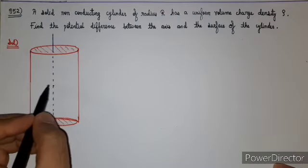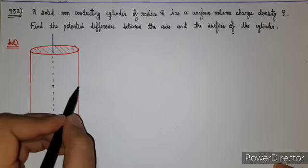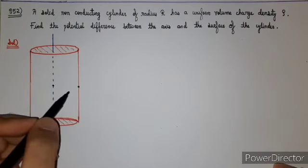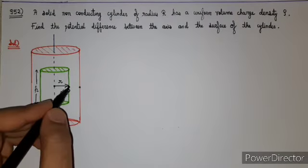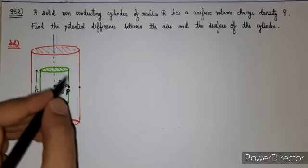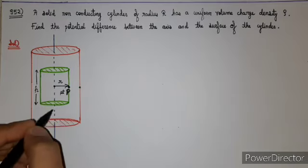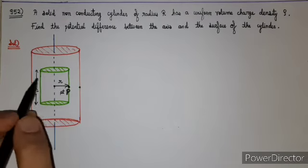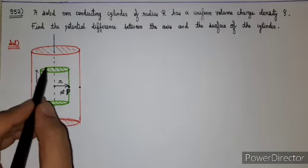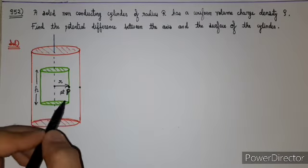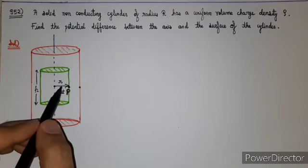This is the axis of the cylinder, and we have to find the potential difference between two points — one lying on the axis and the second lying on the surface of the cylinder. We will first find the electric field at point P, which lies inside the cylinder at a distance small r from the axis. I have constructed a cylindrical Gaussian surface passing through point P, shown in green in the diagram.